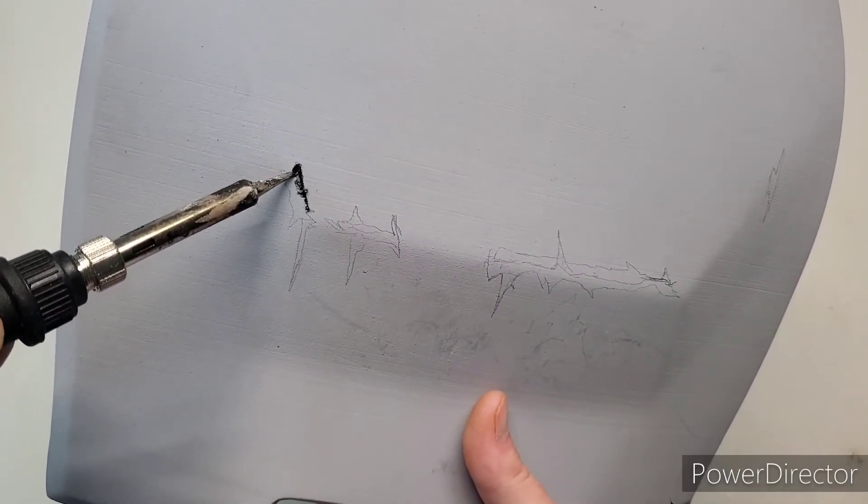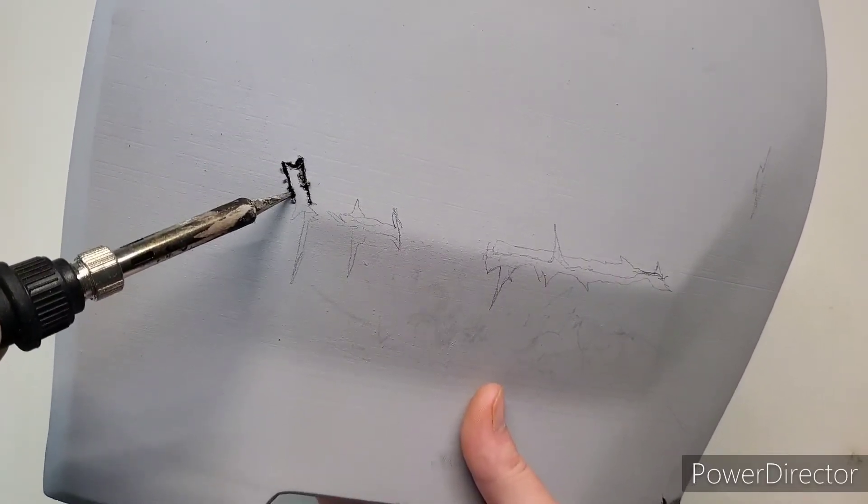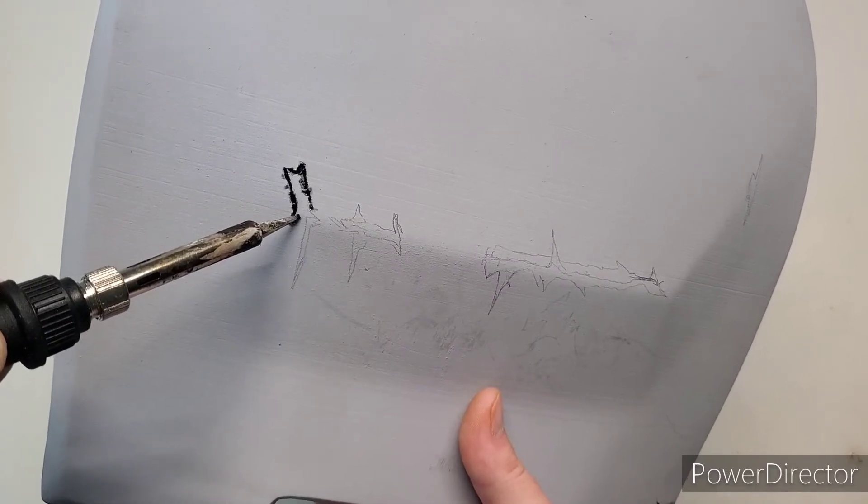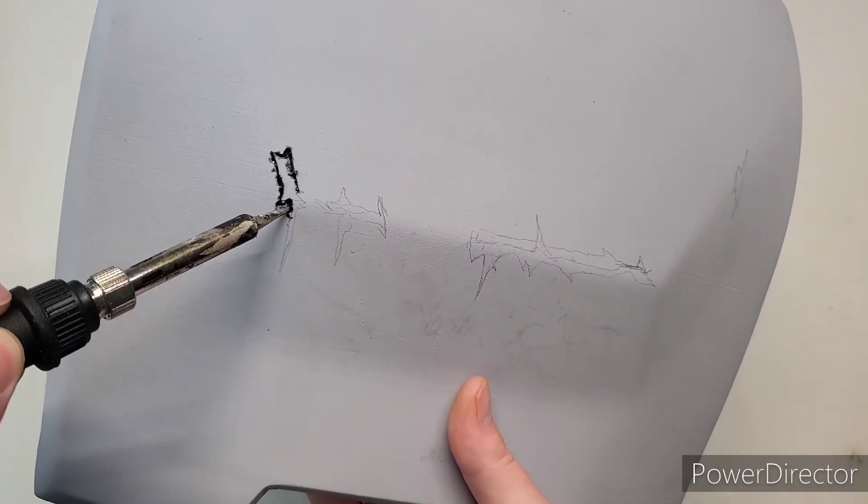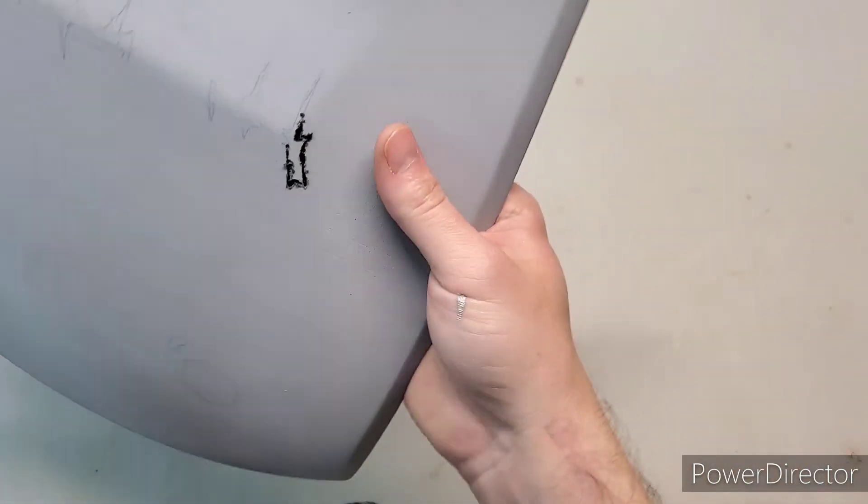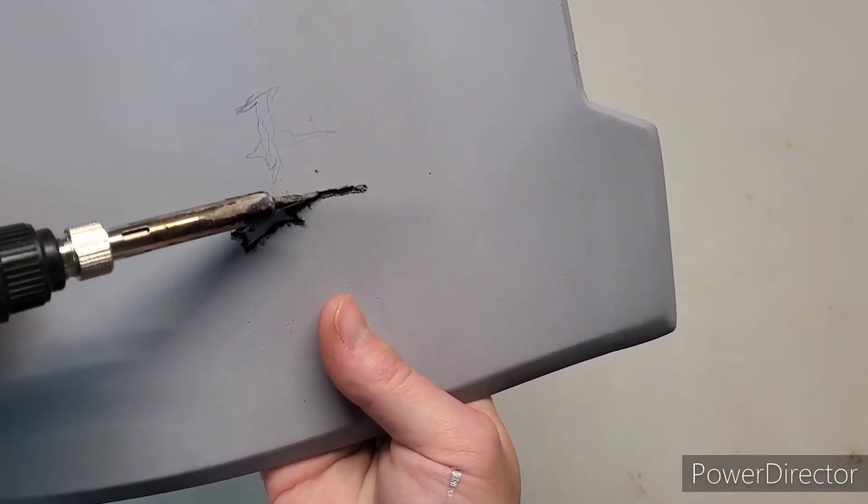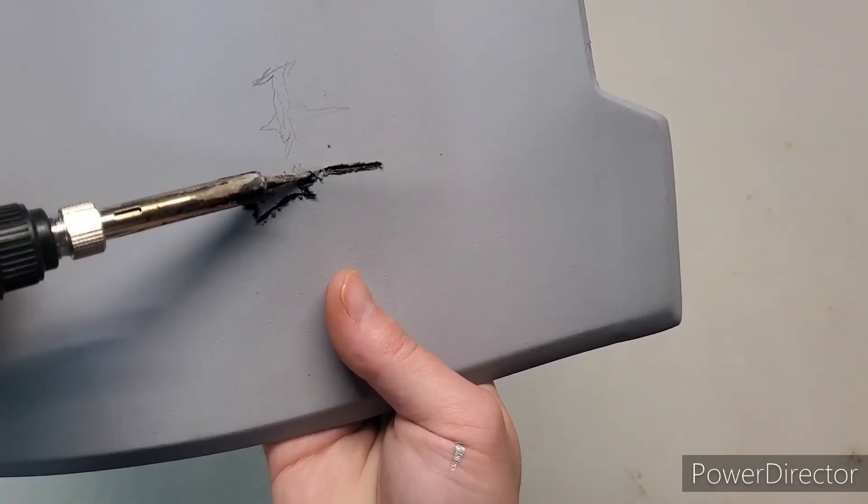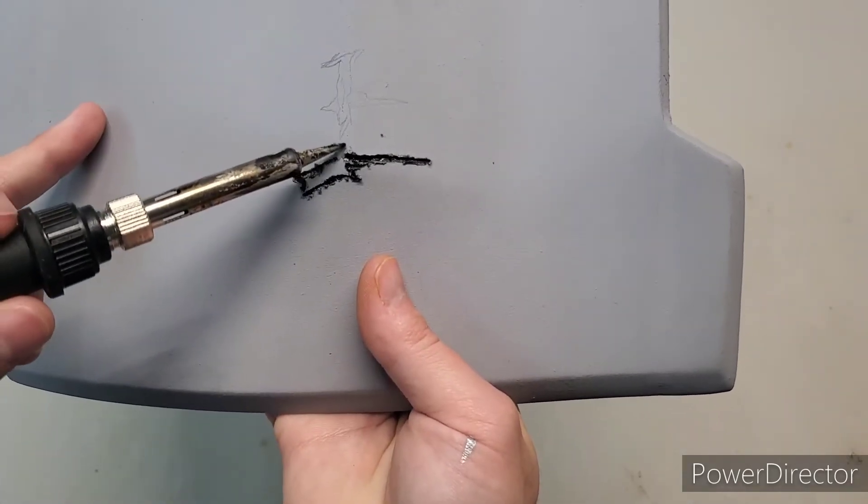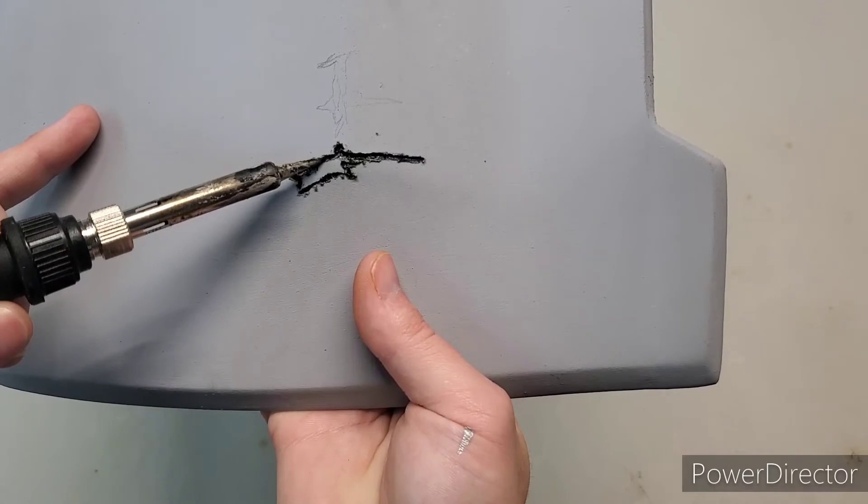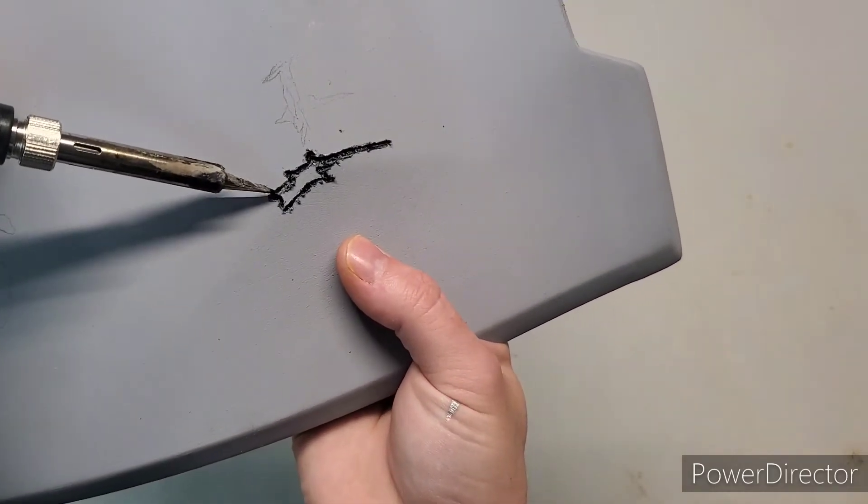One thing I will mention is you can do this before you've applied any filler primer or spot putty or what have you. You can do it during, you can do it after. I tend to like to do it during or after because when I first was doing this, I realized that if I did it all before I applied the filler primer, I would lose a lot of those really small details that we're going to be seeing here in a minute due to the nature of the filler primer building up layers and literally hiding small details as the entire point of that product.